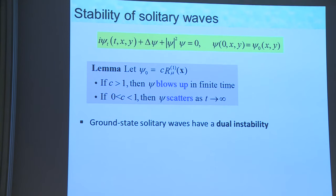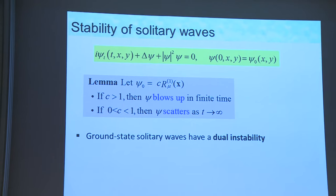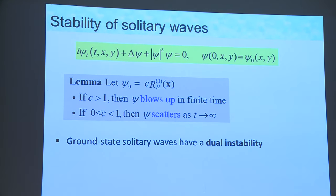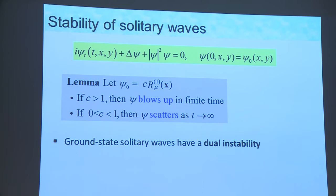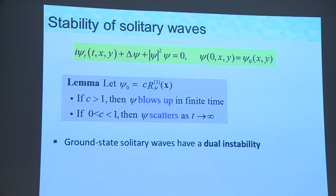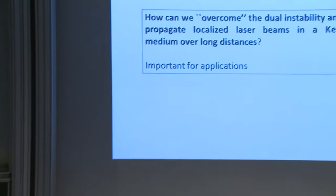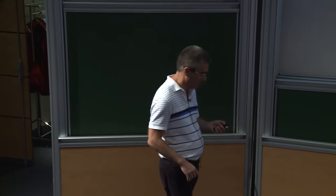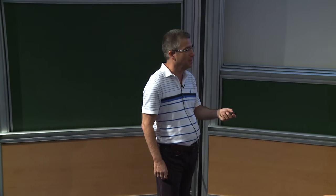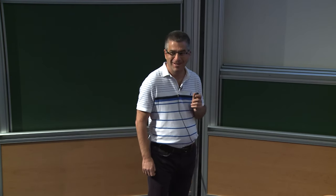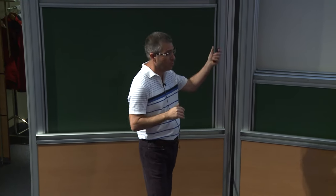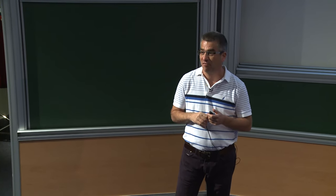What do we know about this solitary wave? If you take an initial condition given by this profile multiplied by C, and C is larger than 1, then the solution blows up in finite time. If C is less than 1, you have scattering. This solitary wave has a dual instability — if you perturb it in either direction, it won't stay. Physically, this is very bad news, because we want to take a laser and shine it several kilometers into the atmosphere in a stable way.